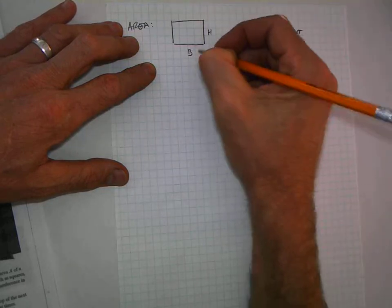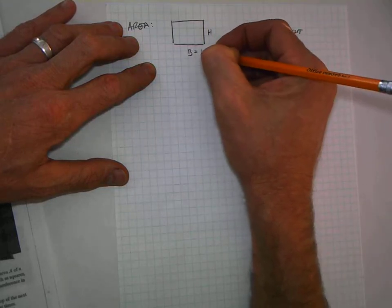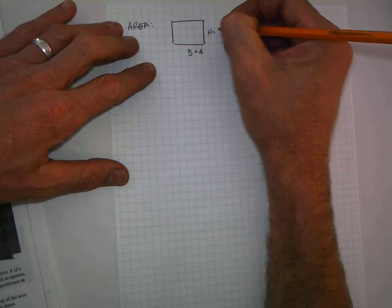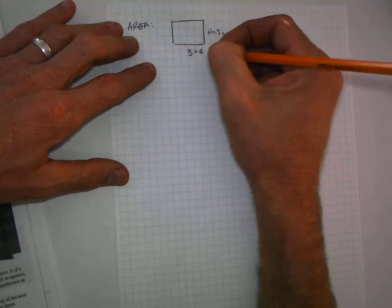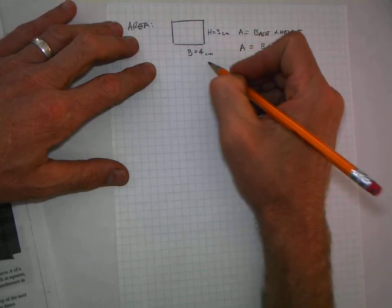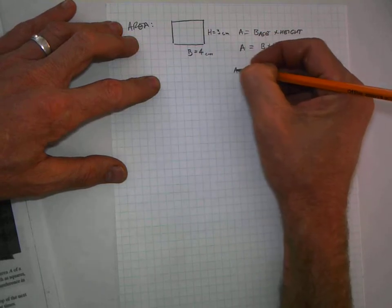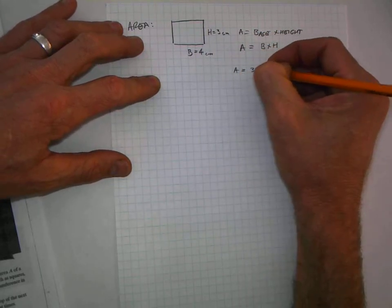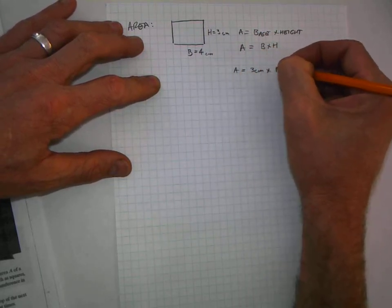For instance, let's give this base a number: 4 centimeters, and this height: 3 centimeters. So for this example, the area is going to be 3 centimeters times 4 centimeters.